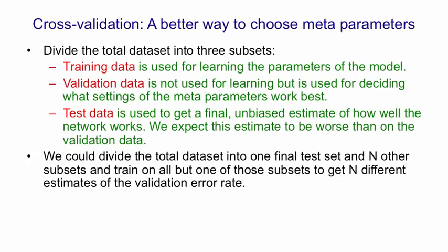Then we can rotate and hold back a different subset as a validation set and so we can get many different estimates of what the best weight penalty is or the best number of hidden units is. This is called n-fold cross-validation.